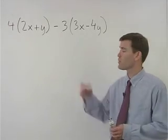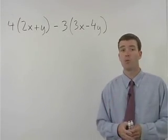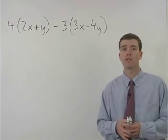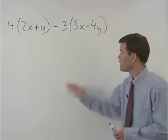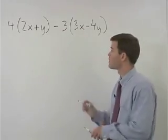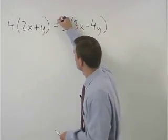To simplify the problem you see here, we're going to use both the distributive property and combining like terms. But before we do anything, we need to change these minus signs to plus negatives.